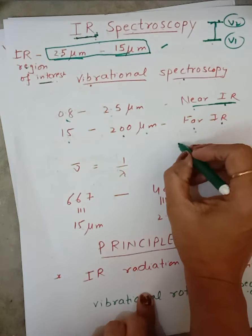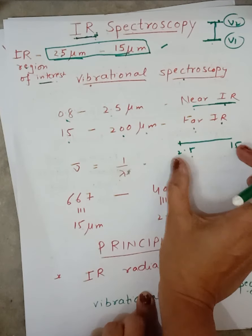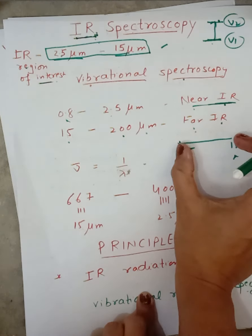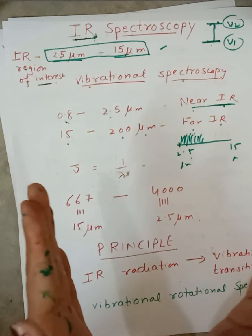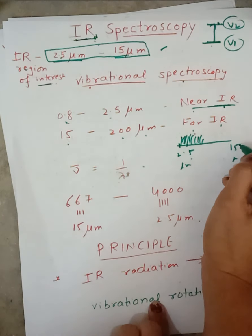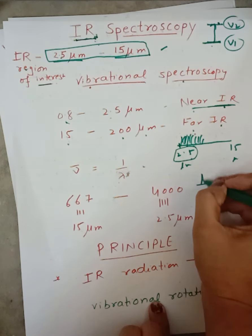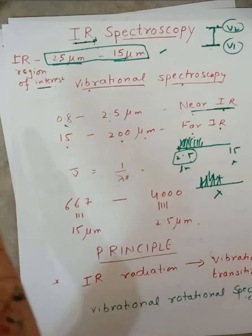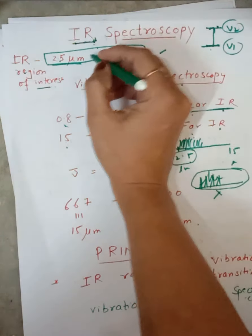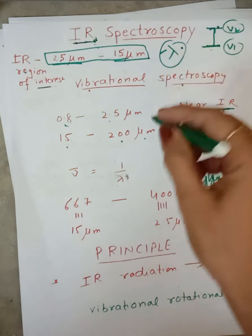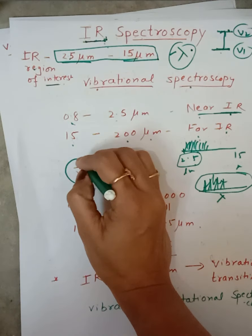Now if we look at the range 2.5 to 15 micrometers, the difference is very small. So peaks in this area will overlap with each other and interpretation will be very difficult. So in IR spectroscopy, if we take spectra versus wavelength, then peaks will be very near to each other or will overlap. So we don't take lambda or wavelength in case of IR spectroscopy.